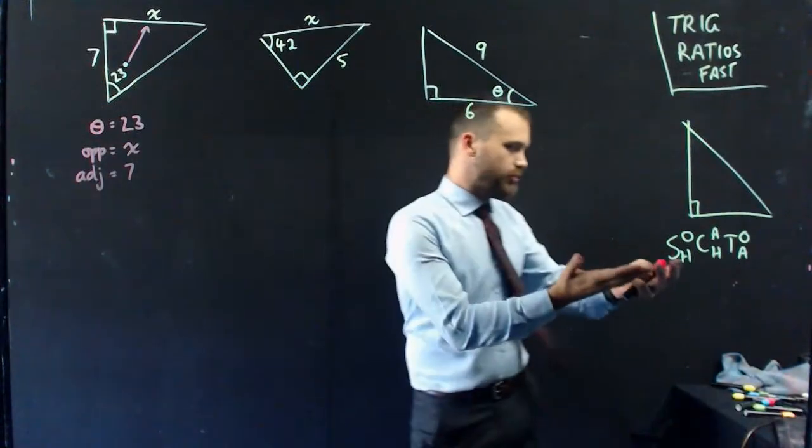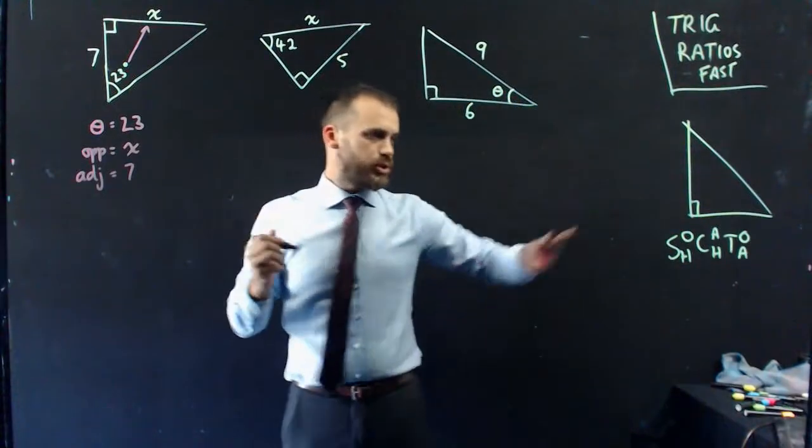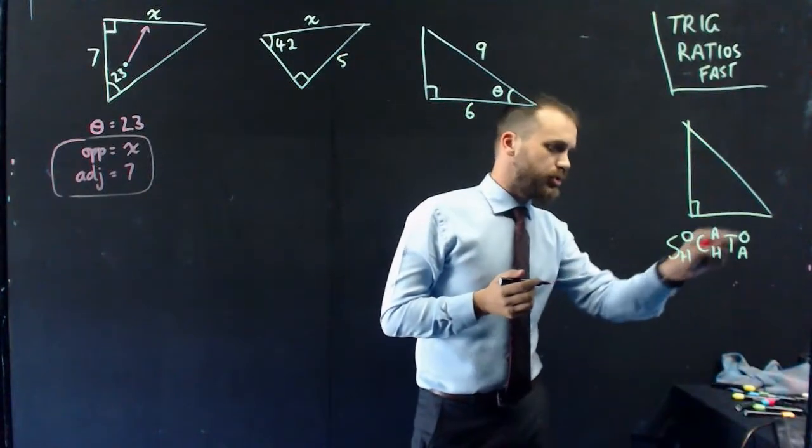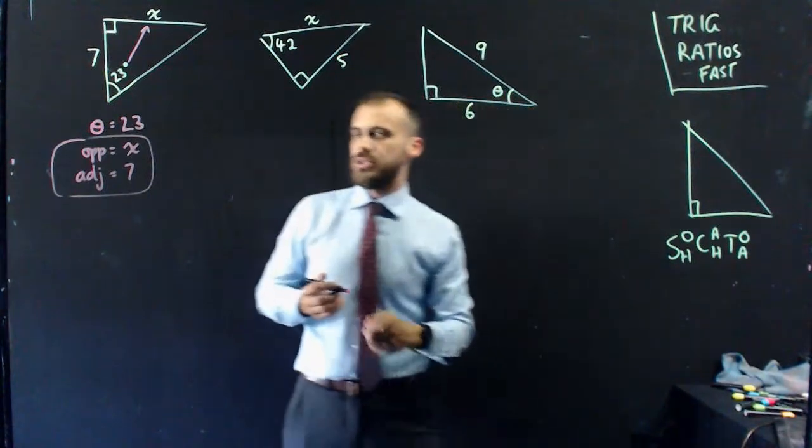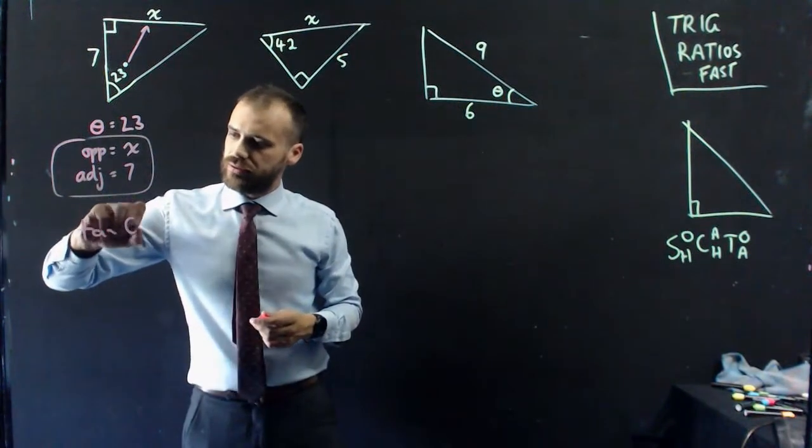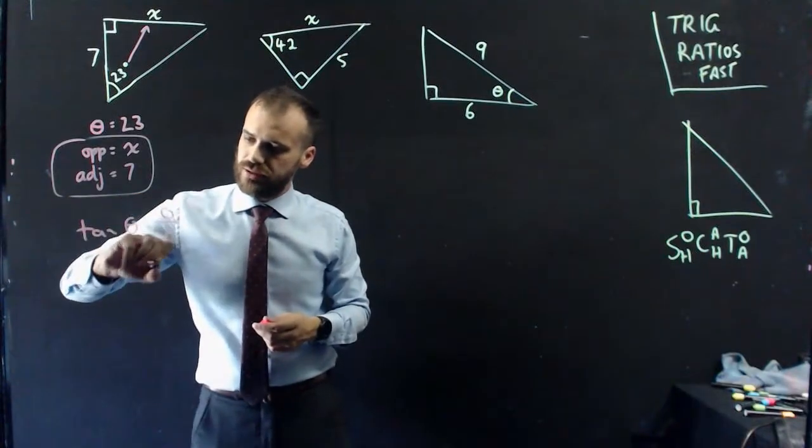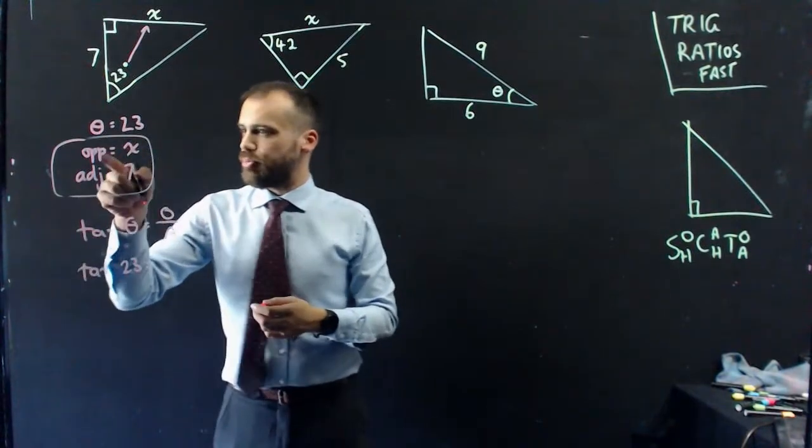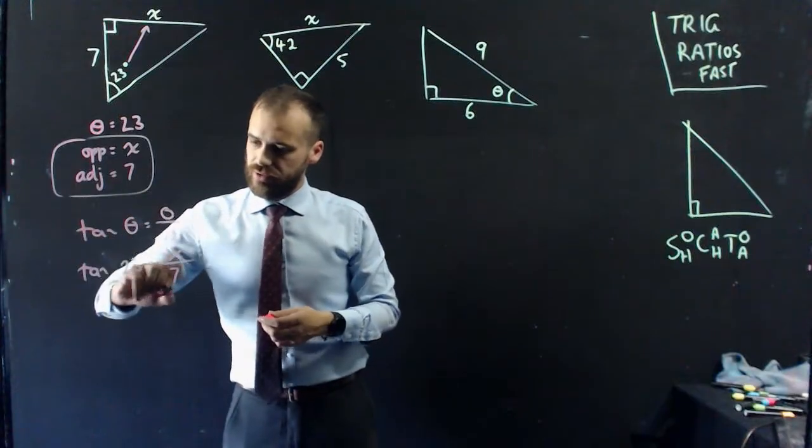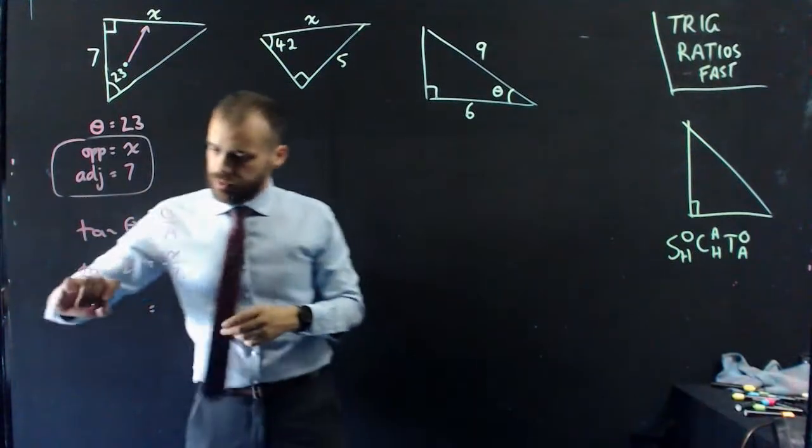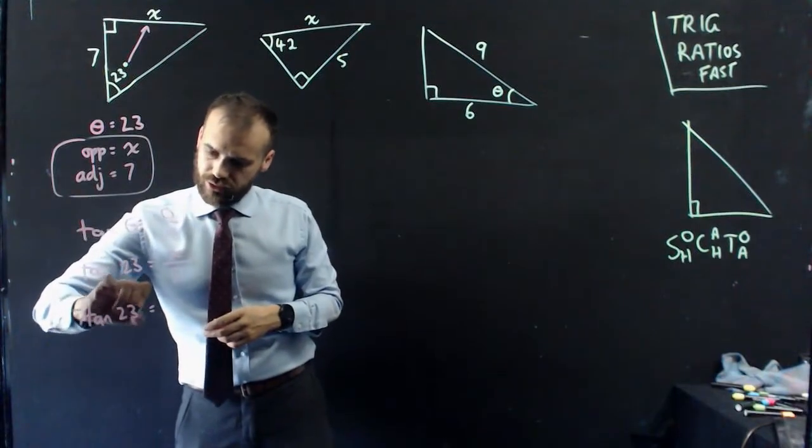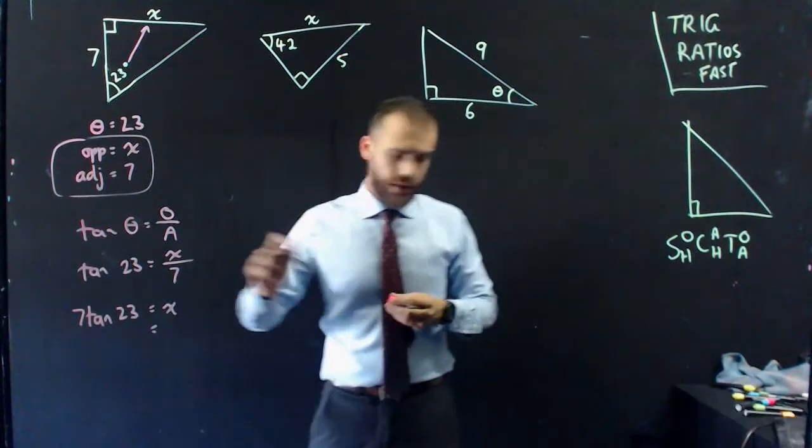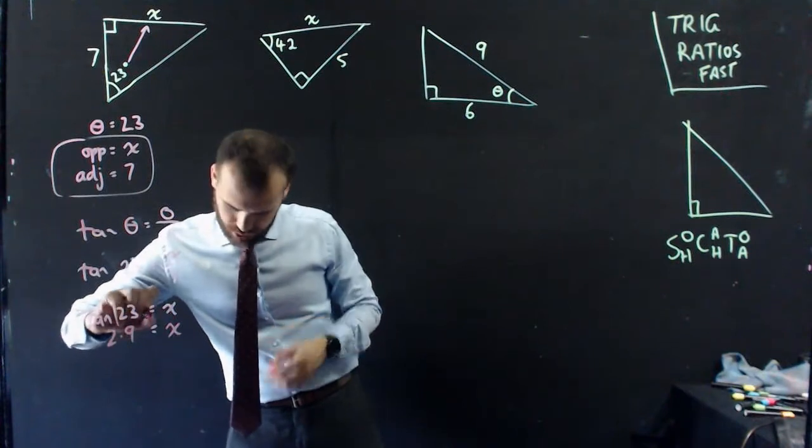Now, we go back to our trig ratios, SOHCAHTOA, and we ask ourselves, which of these trig ratios has opposite and adjacent in it? Opposite and hypotenuse, adjacent and hypotenuse, opposite and adjacent. The tan ratio is the one we want. So we say that tan theta equals opposite over adjacent. We put in the information, tan 23 is our angle, equals opposite x over adjacent 7. We rearrange by multiplying both sides by 7. 7 tan 23 equals x. We type that into our calculator, making sure we're in degrees mode. And therefore, x equals 2.97.